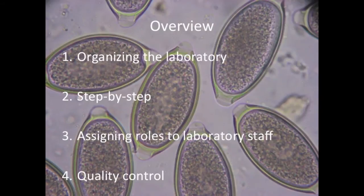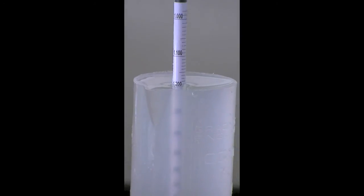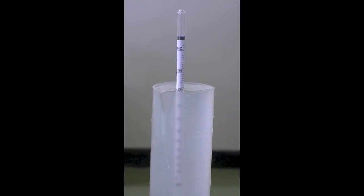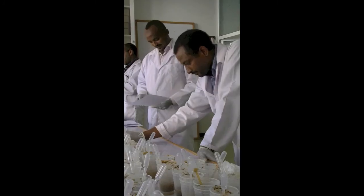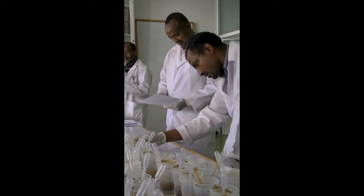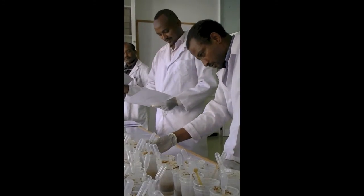4. Quality Control. Quality should be ensured before, during and after processing the samples. First, the McMaster is based on the flotation of eggs, so make sure that the flotation solution has the required specific density. For saturated salt solution, the densitometer should indicate 1.2. Second, it is recommended that the senior researcher re-examines 10% of the slides. Any discrepancies in results should be discussed to increase the repeatability across lab technicians. Third, always verify whether the number of samples reported on the data collection sheet equals the number of samples processed, and make sure each sample is only reported once.